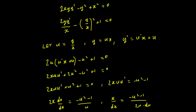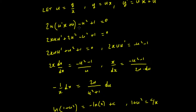We're going to substitute these three equations into the expression. The term 2·(y/x) becomes 2u, and y' becomes u'x plus u. Then minus (y/x)² becomes minus u², plus 1 equals 0. When we multiply out the brackets, the 2u² minus u² just gives us u².